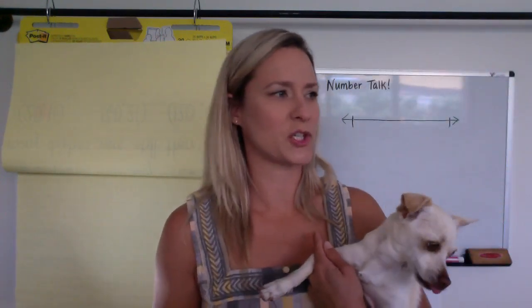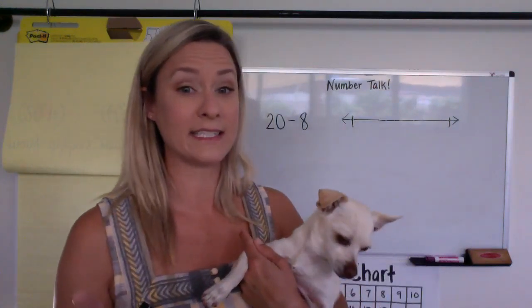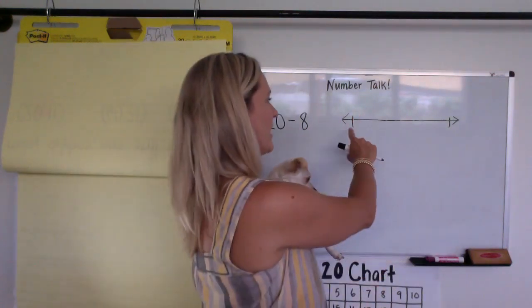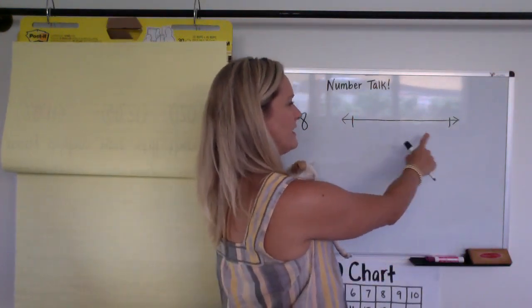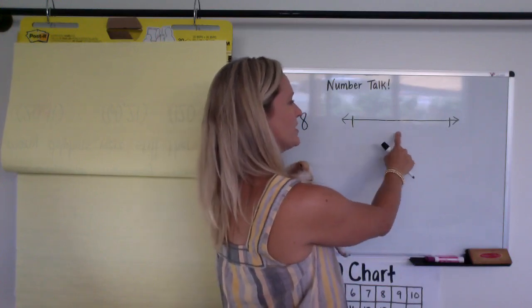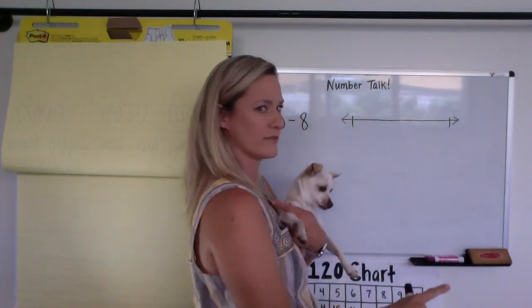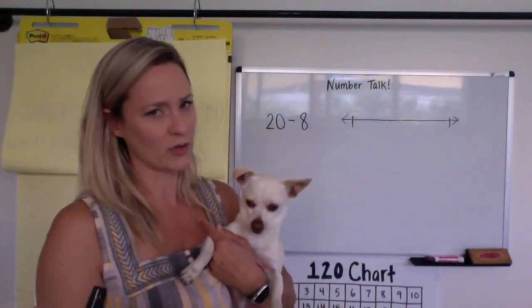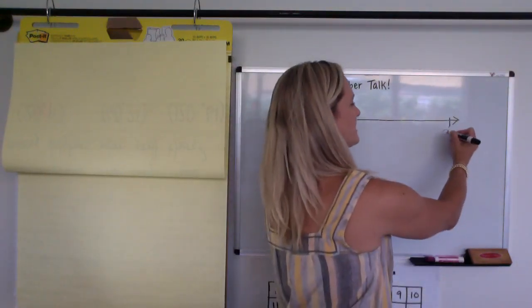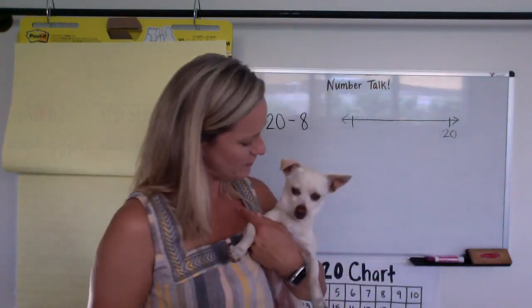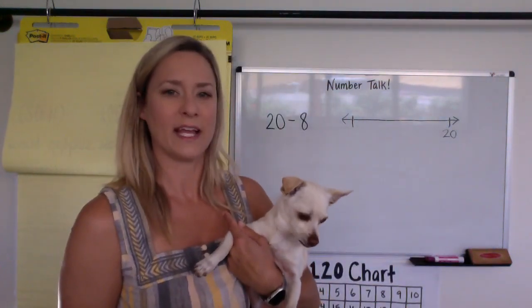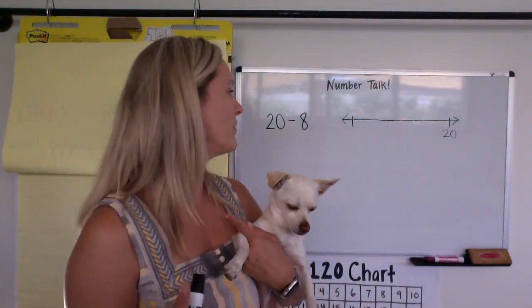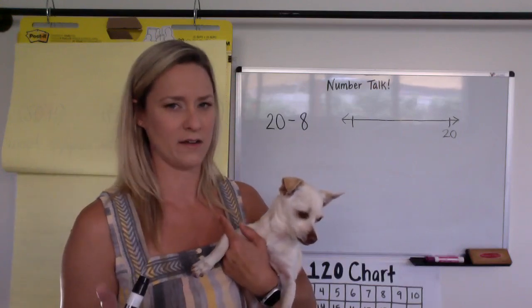So when we're subtracting, we have to make sure that our numbers still make sense on the number line. So we know that if this were zero and this were five, it's zero, one, two, three, four, five - not five, four, three, two, one. So we know we have to start with the 20 on the right side of the number line. Right, Chip? Yeah.